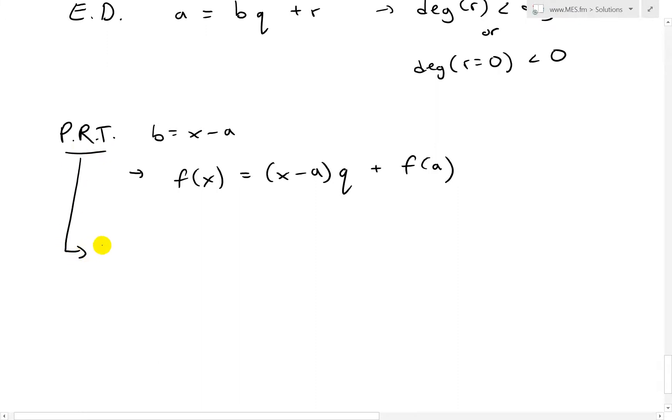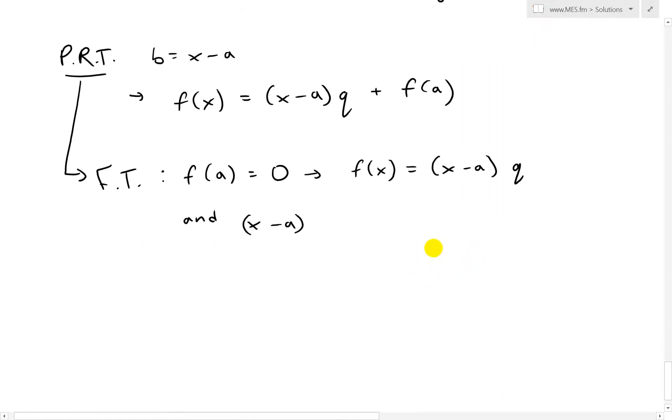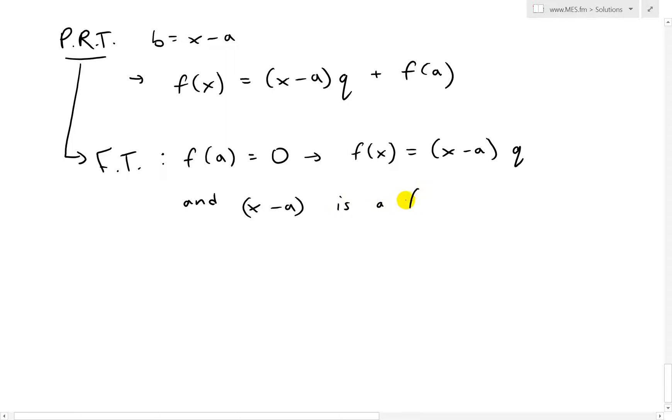And then the special case of this is the factor theorem. This is when F(A) equals zero. In other words, we have the remainder zero so that we have F(x) equals (X-A)Q. Because F(A) is zero, this means that (X-A) is a factor of F(x). Because this means you could just divide it cleanly and get a function Q with remainder zero. Or you could just look at F(x) and break that into two polynomials cleanly.